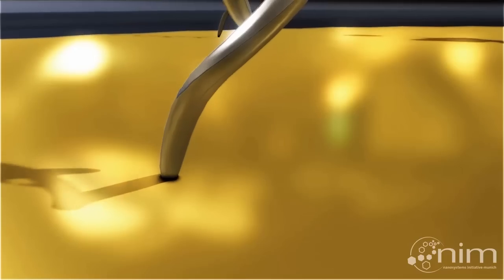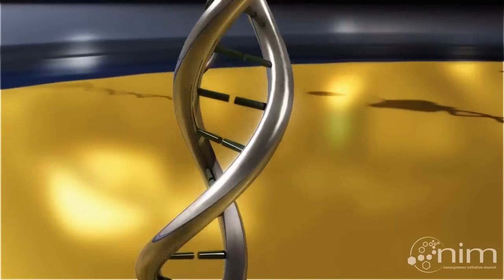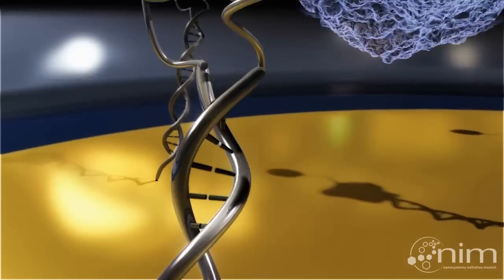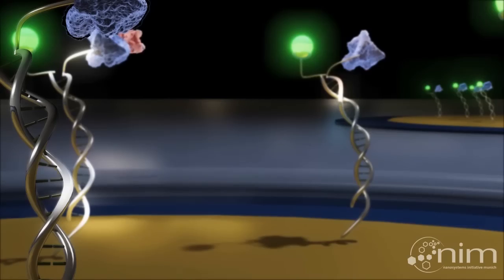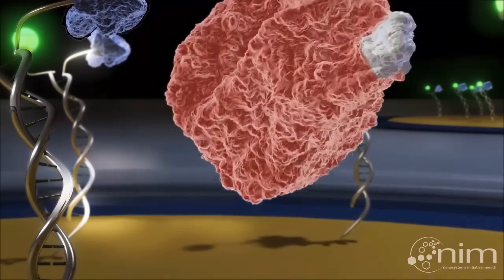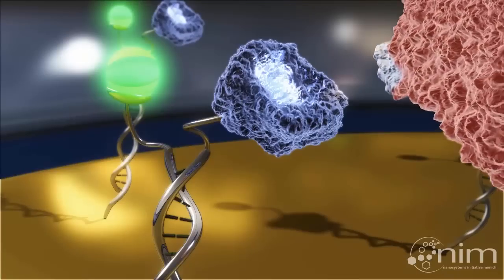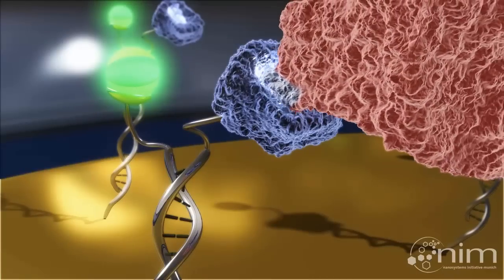The other strand of the DNA helix can be functionalized with any desirable capture molecule, here shown in blue. As the red target is captured by the DNA probe, it alters its hydrodynamic friction, slowing down the DNA movement.